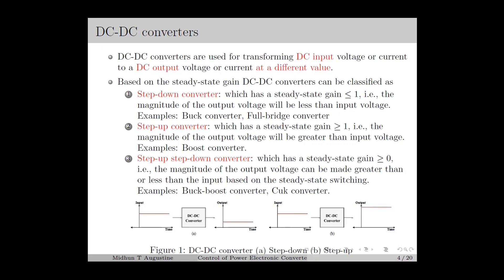In DC to DC converters, the input and output are DC. However, the value of the output voltage or current will be different from the input value. So DC to DC converters are like transformers in DC. Based on the steady state gain, converters can be classified as step-down converters in which the steady state gain is less than or equal to 1 — the magnitude of the output will be less than the input. Examples of step-down converters are buck converter and full bridge converter.